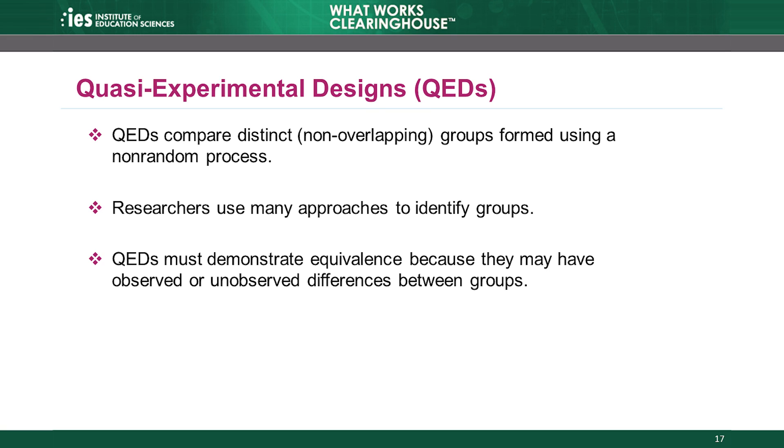So, QEDs, RCTs with high attrition, and RCTs with compromised random assignment all must demonstrate equivalence. The WWC considers any study that uses non-randomly formed groups a QED. There are many ways study authors might form groups. Authors may use convenience samples, which are composed of participants for whom a study author was able to collect data. For example, an author may focus the analysis on a group of classrooms in the same school. Although not all convenience samples make good comparison groups, we're just focusing on whether this is an eligible design, and it is.